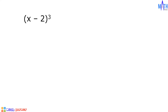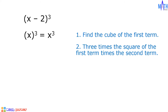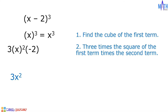Next example: what is the cube of x minus 2? Step number 1: the first term is x. Cube of x equals x cubed. Step number 2: 3 times the square of the first term times the second term. We have 3 times square of x times negative 2. 3 times square of x equals 3x squared. Times negative 2 equals negative 6x squared.